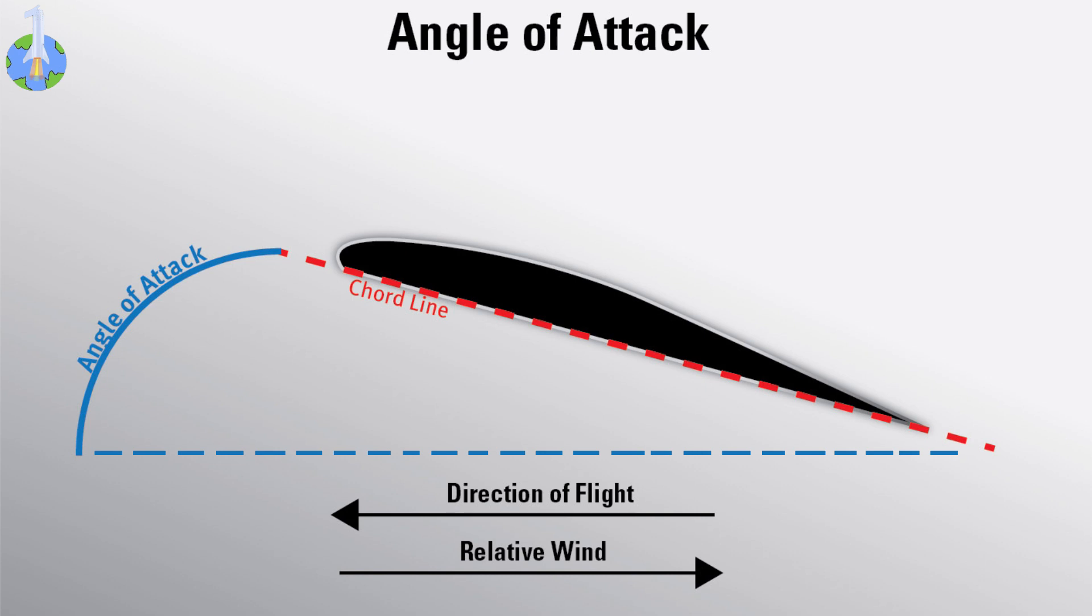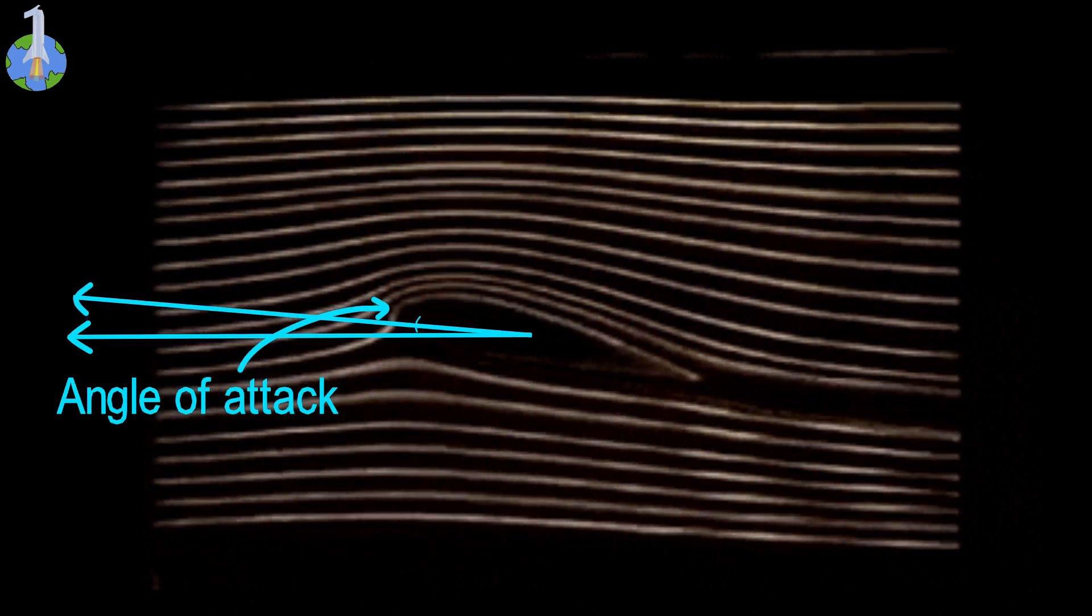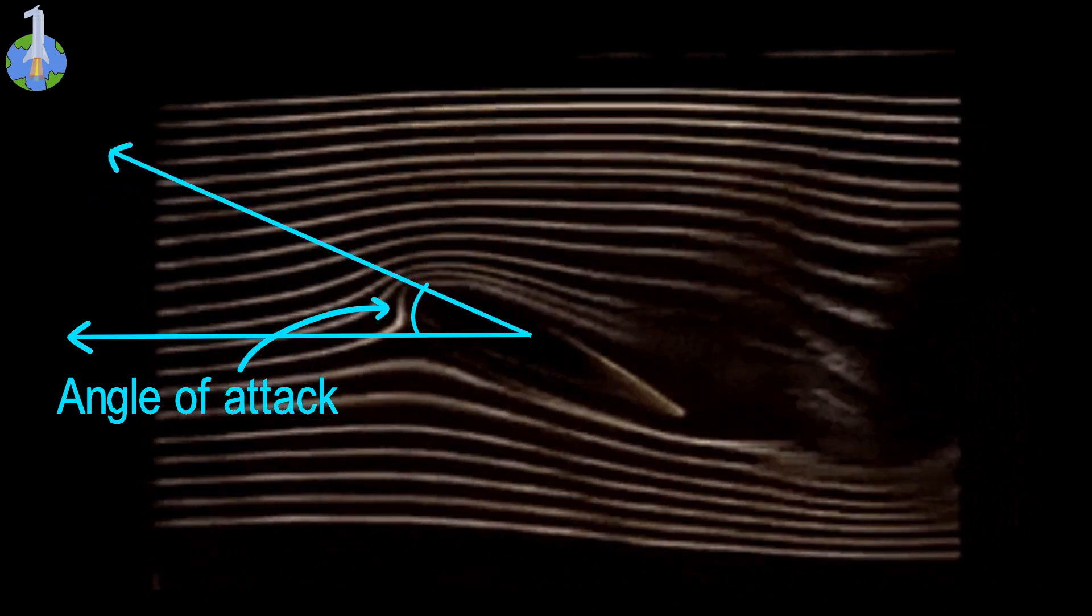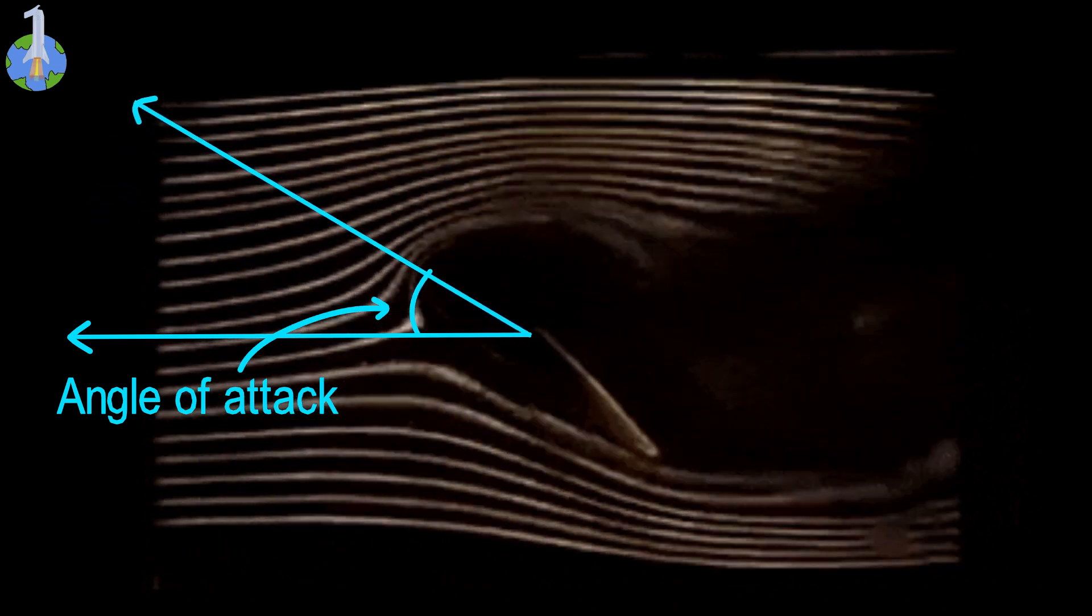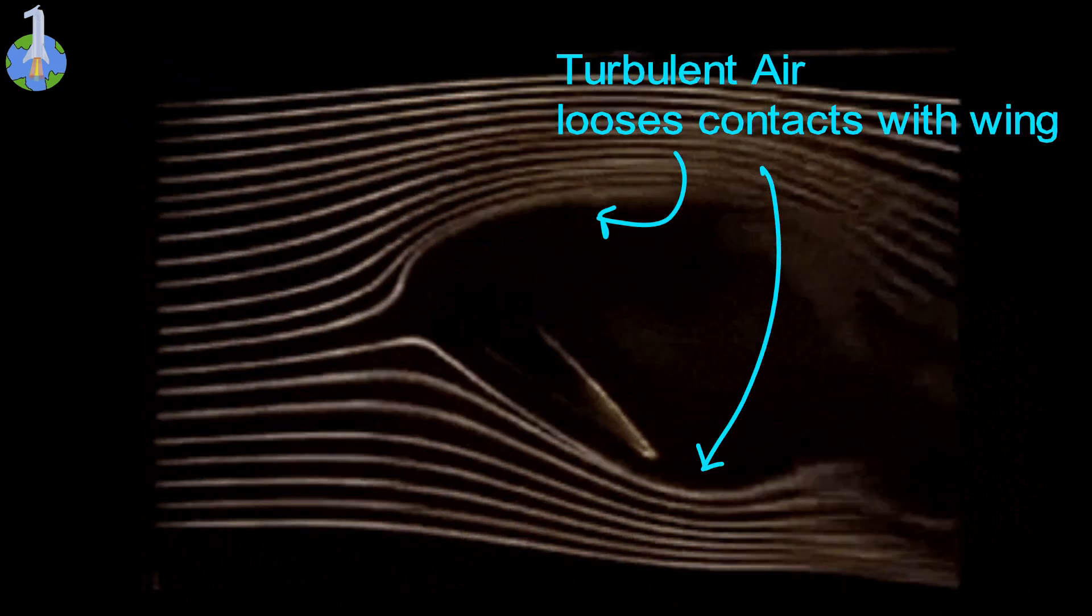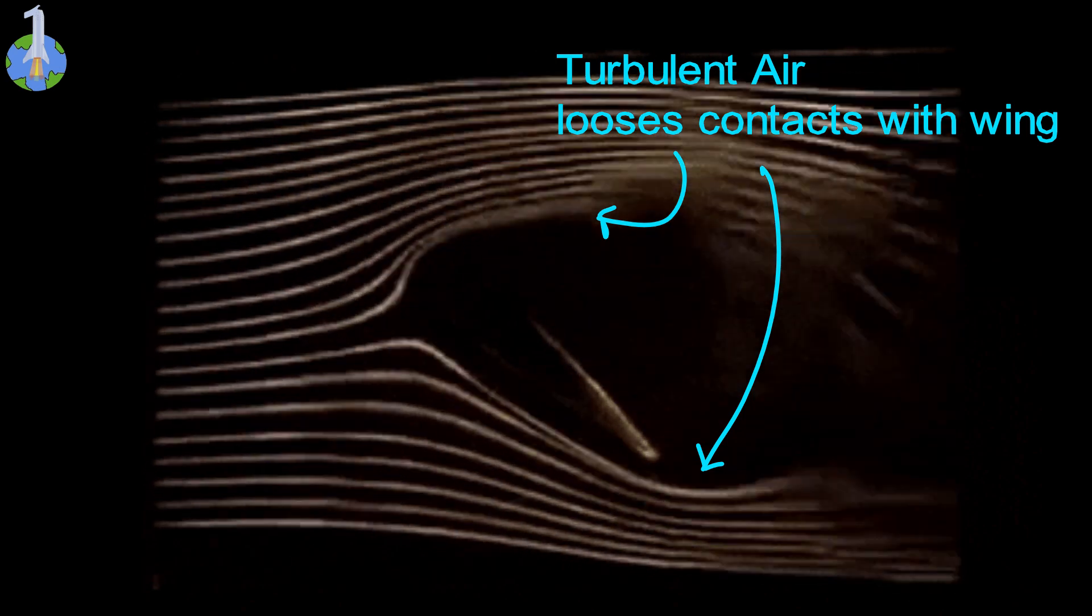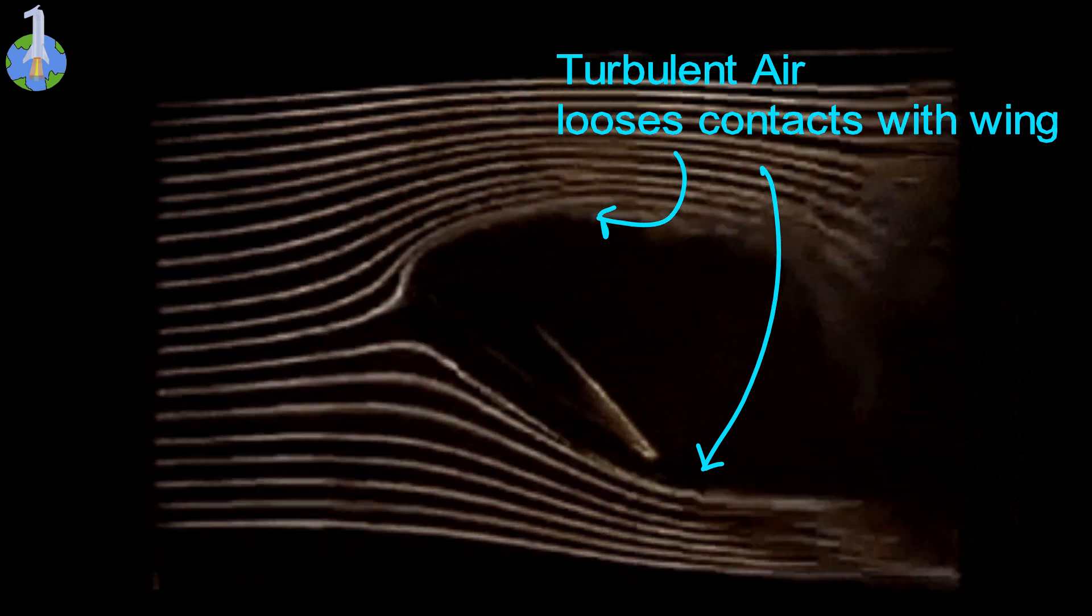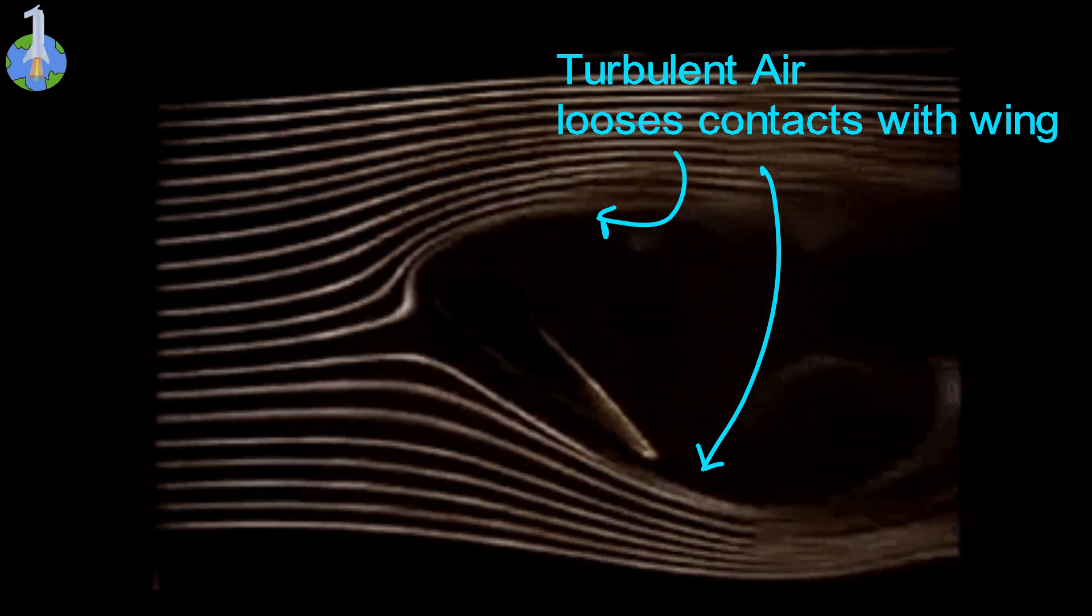It is the angle between relative wind and chord line. As the angle of attack increases, if everything else stays the same, lift increases and amount of drag increases too. Once the angle of attack increases beyond a certain point, the air no longer flows smoothly around the wing. It starts to separate from the wing and become turbulent. This is known as stalling.